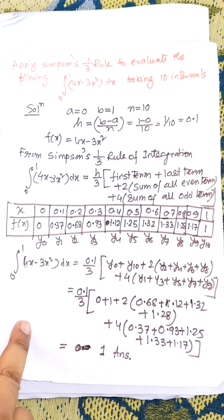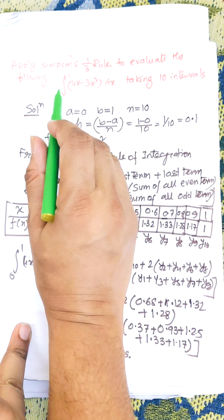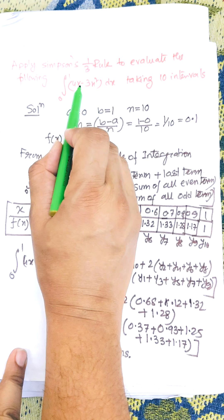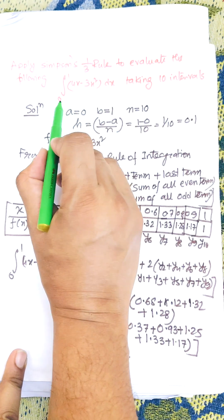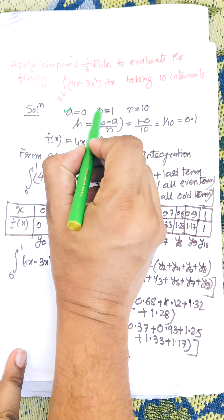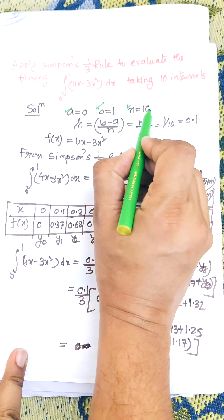Hey everybody, in this video I am going to discuss Simpson's one-third rule for the following integration: 0 to 1, 4x minus 3x squared dx, taking 10 intervals. Here lower limit a equals 0, upper limit b equals 1, and n, the number of intervals, equals 10.